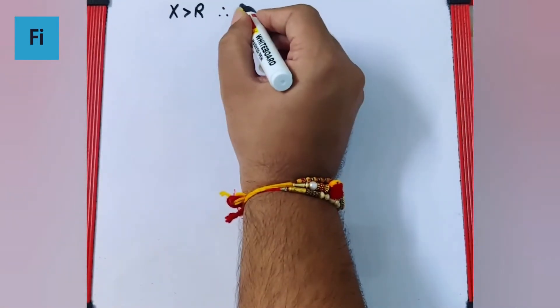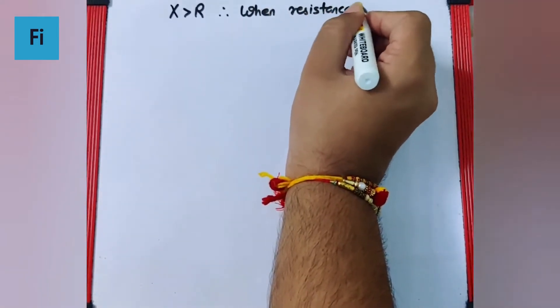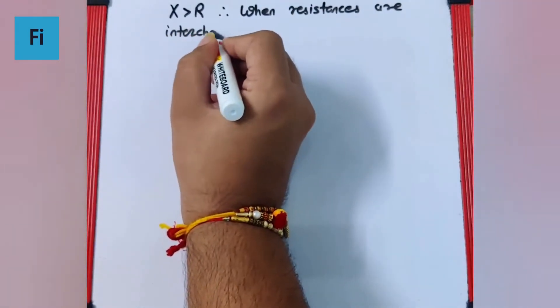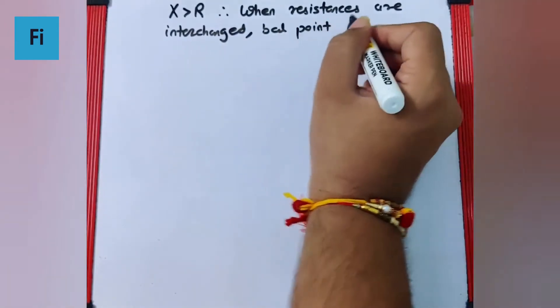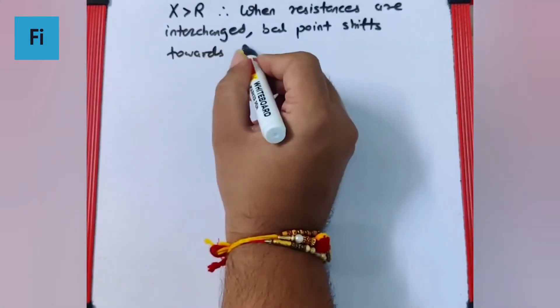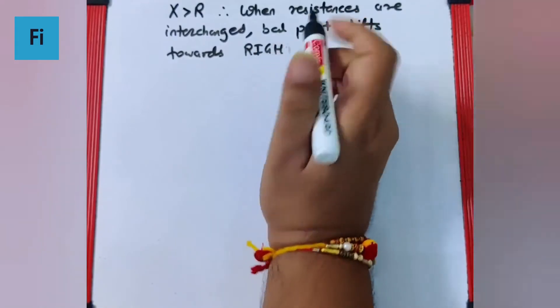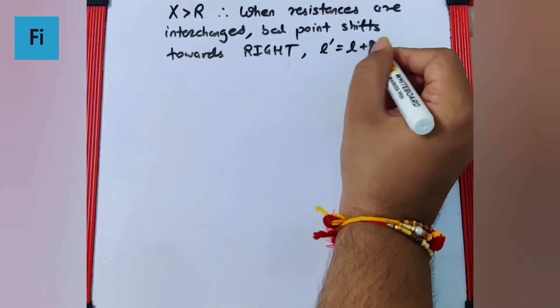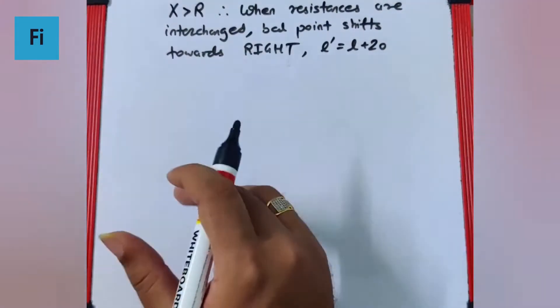Since X is greater than R, when the resistances are interchanged, the balance point shifts towards right, which means that the new balance length is old balance length plus 20.